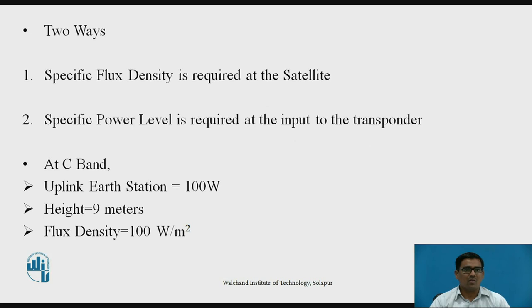There are two ways to specify: first, specific flux density is required at the satellite, and second, specific power level is required at the input to the transponder. For example, at C band, for uplink earth station we require 100 Watt power and antenna height of 9 meters. Therefore, the flux density for this combination is 100 Watt per meter square.